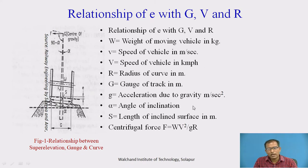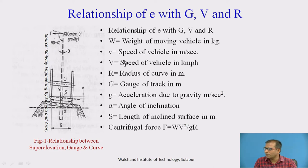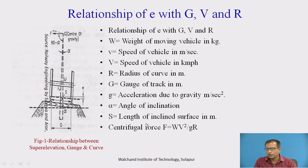Let us derive the equation for equilibrium superelevation. The terms involved are: W is the weight of the vehicle acting through the CG; V is the speed of the vehicle in m/s or kmph; R is the radius; G is the gauge of the track in meters (gauge distance); small g is acceleration due to gravity in m/s²; α is the angle; S is the length of the inclined surface in meters; and centrifugal force F = WV²/gR.